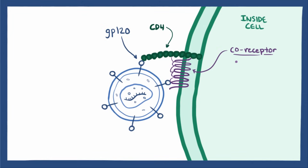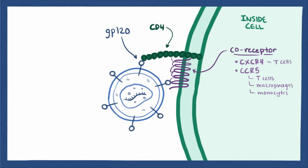The most common coreceptors that HIV uses are the CXCR4 coreceptor, which is found mainly on T cells, or the CCR5 coreceptor, which is found on T cells, macrophages, monocytes, and dendritic cells.